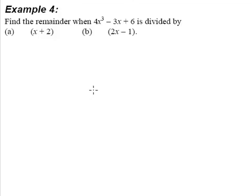In this example, we'll use the remainder theorem to find the remainder when 4x³ - 3x + 6 is divided by first x + 2 and then followed by 2x - 1.